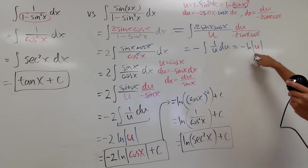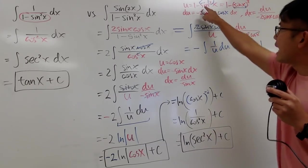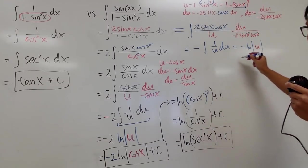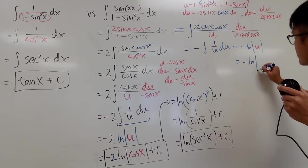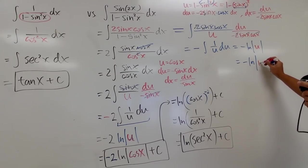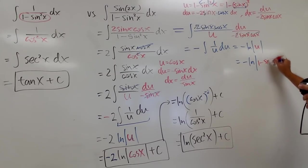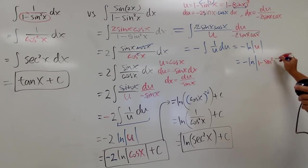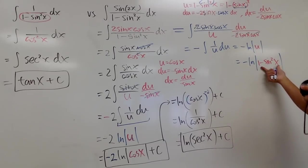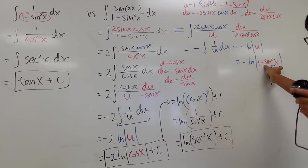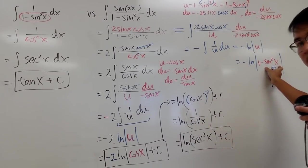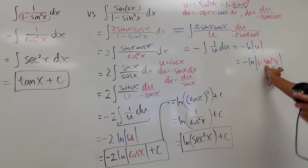And the u in our case is 1 minus sine squared x. So you will have to write this down as negative ln of the absolute value of 1 minus sine squared x. If you look at this inside expression, it is always positive — but we have 1 minus some positive number.